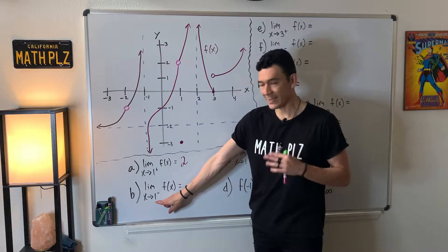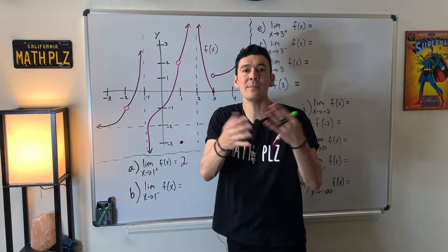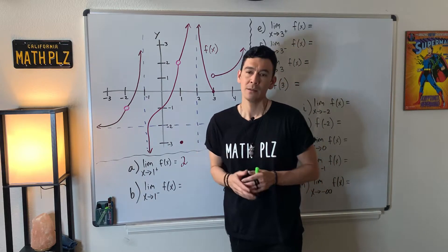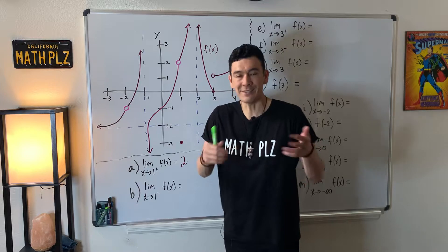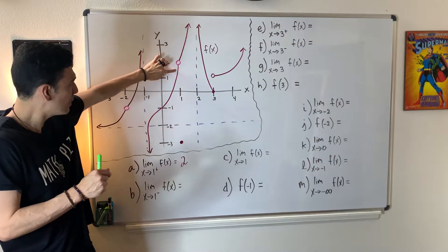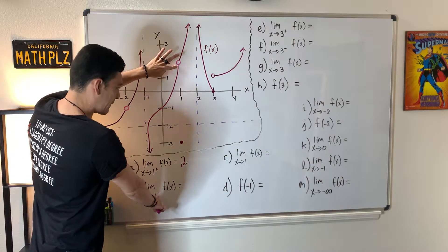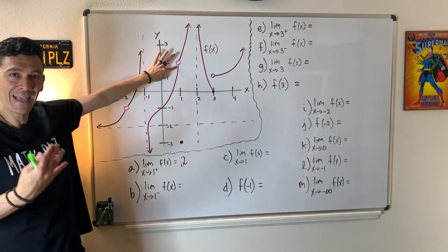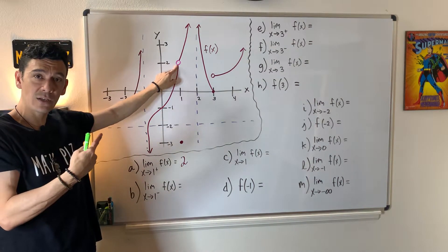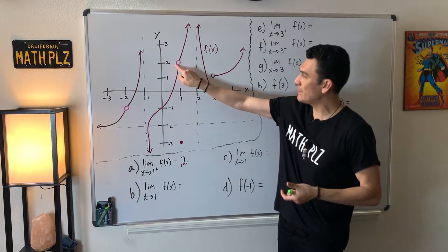Now for part B, I want to approach one but from the left of one. A number that's really close to one from the left is like 0.99, 0.999, and so on. So I'm motivated to pick a point right here — these points have x coordinates getting closer to one from the left-hand side. Moving closer and closer, the approximate y coordinate appears to be again the number two.